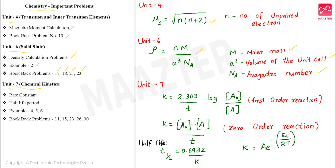The example problems are 4, 5, and 6 — book back problems. Question number 11, question number 15, question number 23, question number 26, question number 30. These are very important problems.